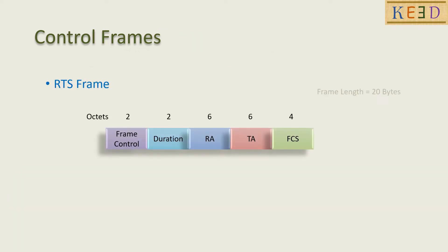RTS frame looks like this. TA is required so that while responding to the station, the one corresponding to RA needs to reply to the TA.